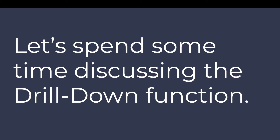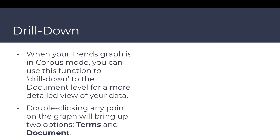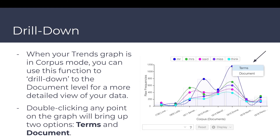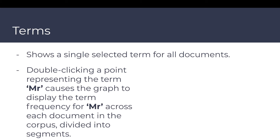Let's spend some time discussing the drill down function. When your trends graph is in corpus mode, you can use this function to drill down to the document level for a more detailed view of your data. Double-clicking any point on the graph will bring up two options: Terms and Document. 'Terms' shows a single selected term for all documents. For example, if you double-click the point representing 'Mr.', the graph would display the term frequency for 'Mr.' across each document in the corpus, divided into segments.